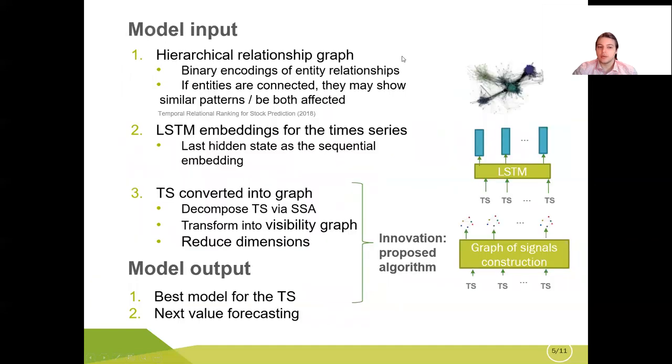The model input consists of three parts. The first one is relationship graph which has binary encodings of entity relationships and we know that if entities are connected they may show some similar patterns or be both affected after if even one entity has been changed. The second input is LSTM embeddings for the time series. We take last hidden state as the sequential embedding. The third step is pretty novel is how we transform the time series into its associated graph.